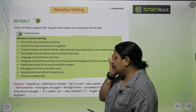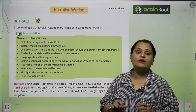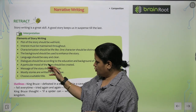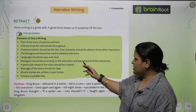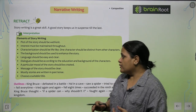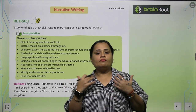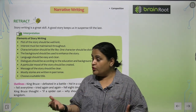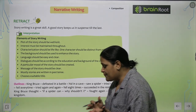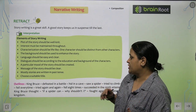Language should be easy and clear. Your language should be clear and easy to understand. Dialogues should be according to the education and background of the characters. A particular mood of the story should be created — when you read the story, a particular mood should come through. The message of the story should also be clear — whatever you want to convey through your story, that message should be evident.